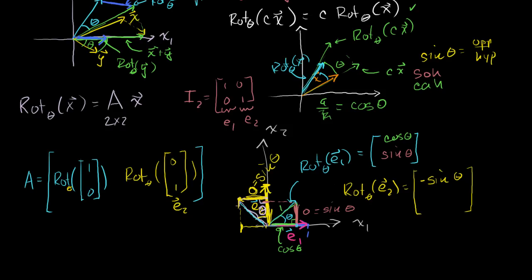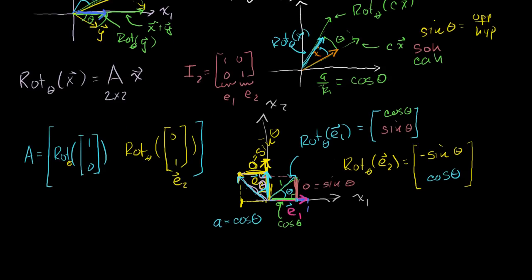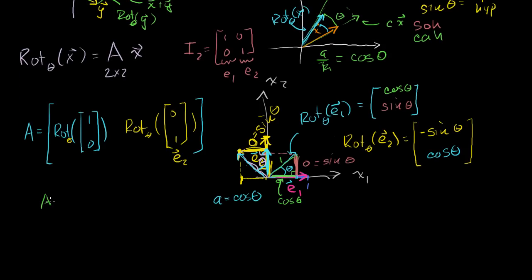For the new y-component of the rotated E2, we look at the adjacent side to the angle in the right triangle. Adjacent over hypotenuse equals cosine of theta, and the hypotenuse is 1, so this adjacent side is just cosine of theta. So the new y-coordinate is cosine of theta. When we apply the transformation to each basis vector, we get A: the transformation of E1 is (cosine theta, sine theta), and the transformation of E2 is (minus sine theta, cosine theta).